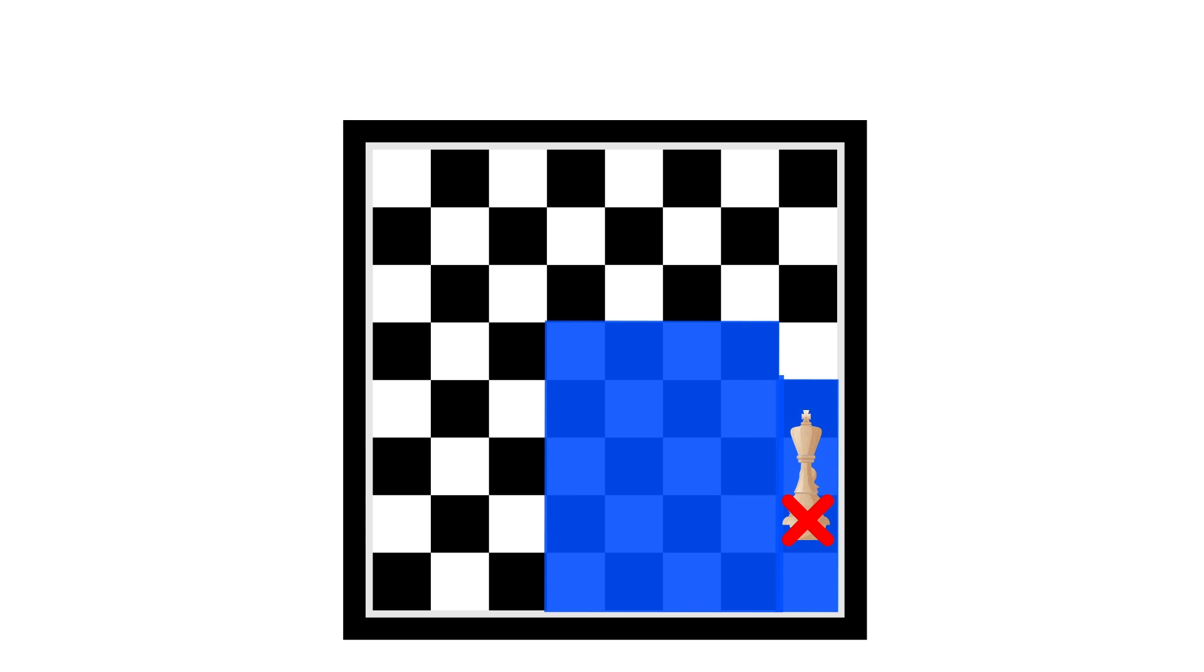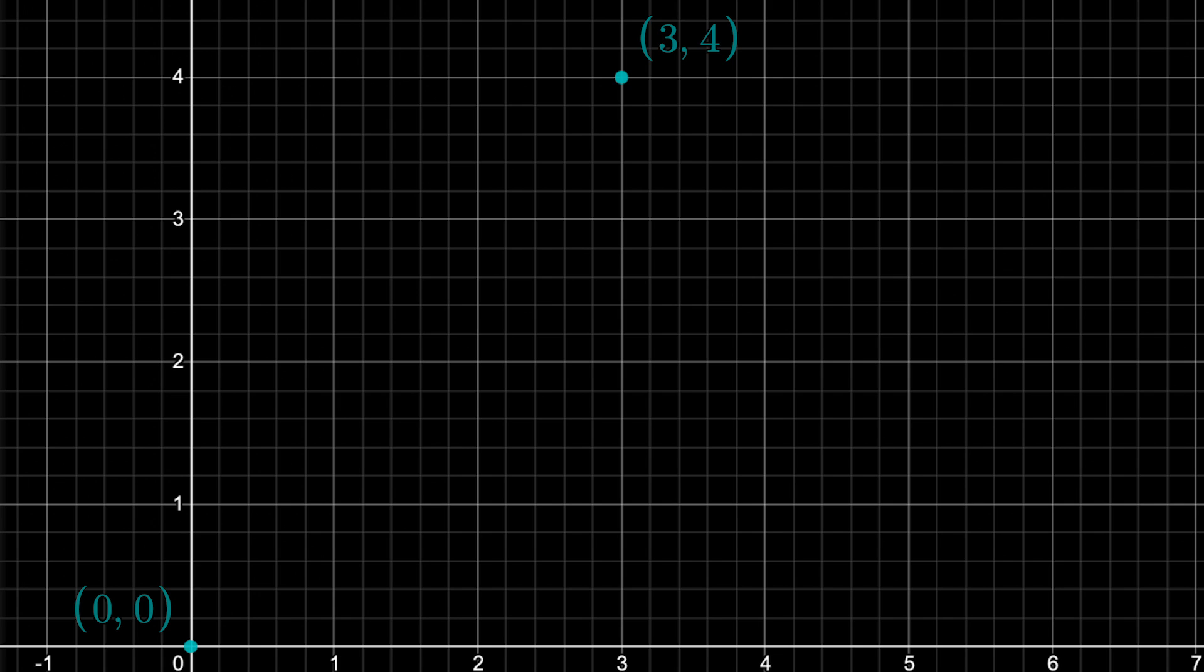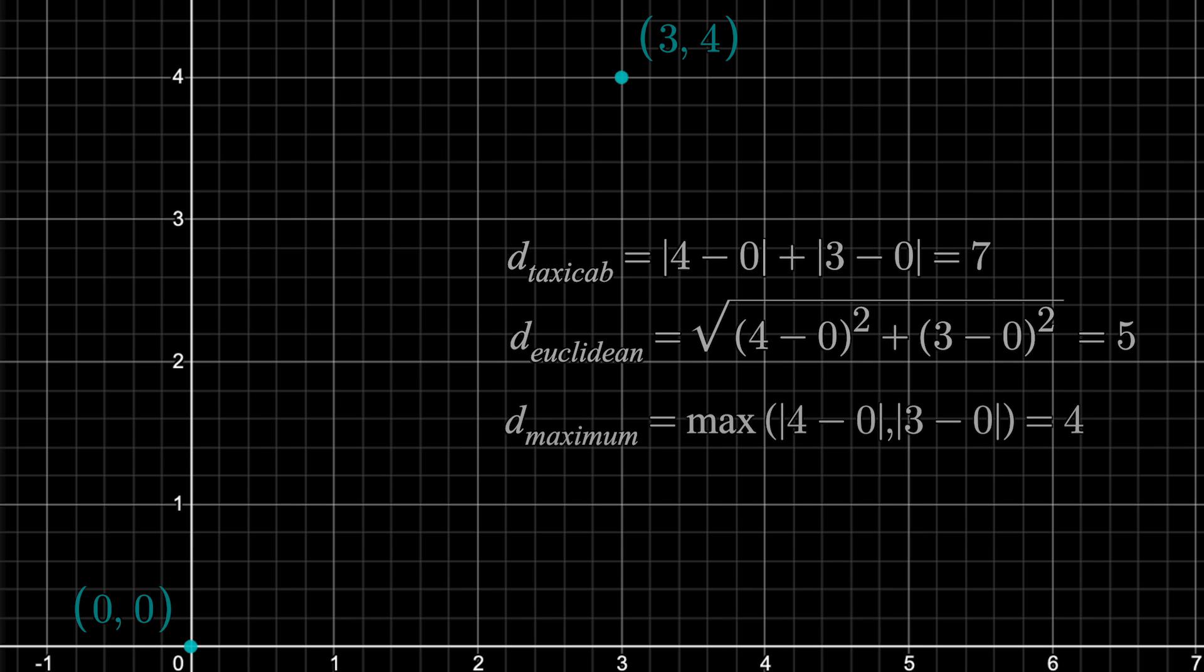Okay, so now you can see, if someone asks you for the distance from the origin to (3,4), it really depends on the metric. The Euclidean distance is 5, using the taxicab metric it's 7, and the maximum metric is 4.